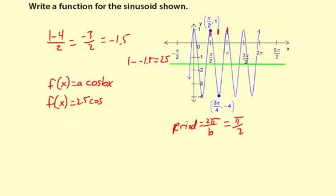So 2 pi over b equals pi over 2. And what we can do is we can cross multiply and then go ahead and solve for the b value. So b times pi equals 2 pi times 2, which is 4 pi. Divide by pi, so b equals 4.